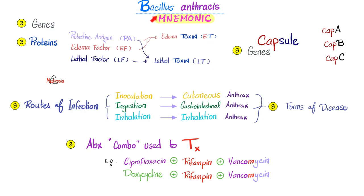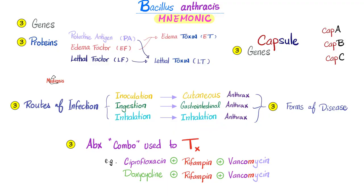We have three routes of infection: inoculation, ingestion, or inhalation. And we have three forms of anthrax. We have cutaneous anthrax caused by inoculation, gastrointestinal anthrax caused by ingestion, and inhalation anthrax caused by — guess what — inhalation.